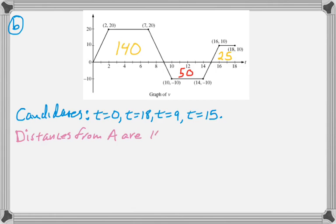So, the distances from A are 140 at t equals 9. And then 90 at t equals 15, because you were at 140 and you subtract 50 from it, because you're going backwards. And now, from that 90, you have to add 25, because it moves in the other direction again.